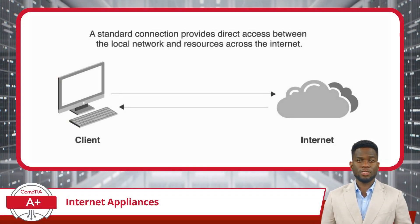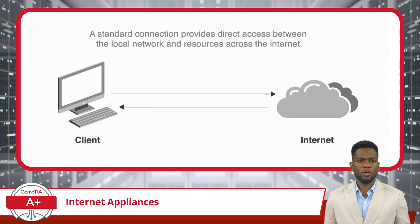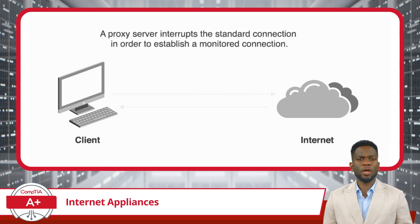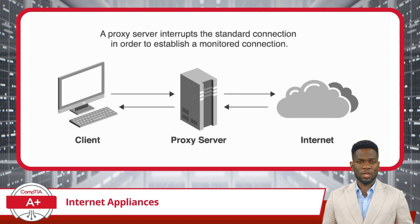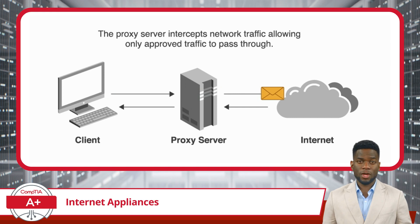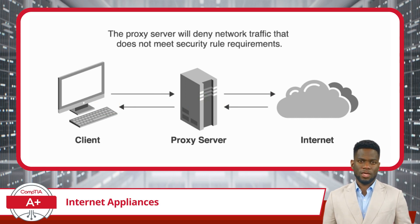Lastly, we have proxy servers. A standard internet connection provides direct access between a local network and resources across the internet. A proxy server interrupts the standard connection in order to establish a monitored connection — that is why we can refer to it as a middleman. The proxy server can then intercept network traffic, allowing only approved traffic to pass through, and will deny network traffic that violates any security rules.